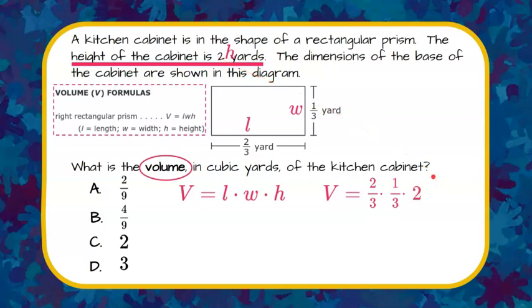So now to find the volume, I need to multiply. So I'm going to first multiply two-thirds times one-third. When I do that, I multiply the numerators, and then I multiply the denominators. So two times one is two, and three times three is nine. So two-thirds times one-third is two-ninths.